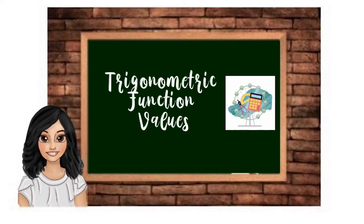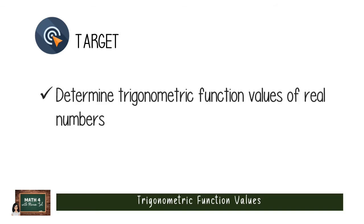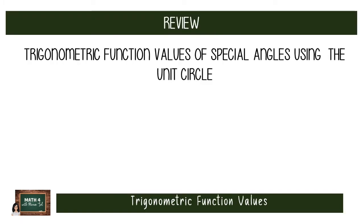Last time, we learned how to obtain the trigonometric function values of special angles whose terminal sides contain points in the unit circle. Would it be possible to obtain the trigonometric function values of real numbers? That will be the focus of this video. The only target we have to accomplish is to determine trigonometric function values of real numbers. Before proceeding, let's recall how we determined trigonometric function values of special angles using the unit circle.